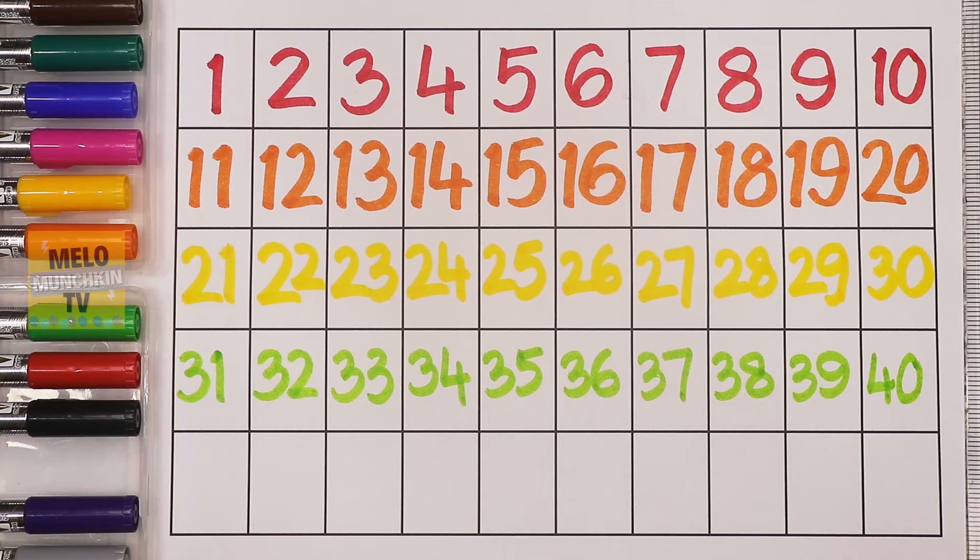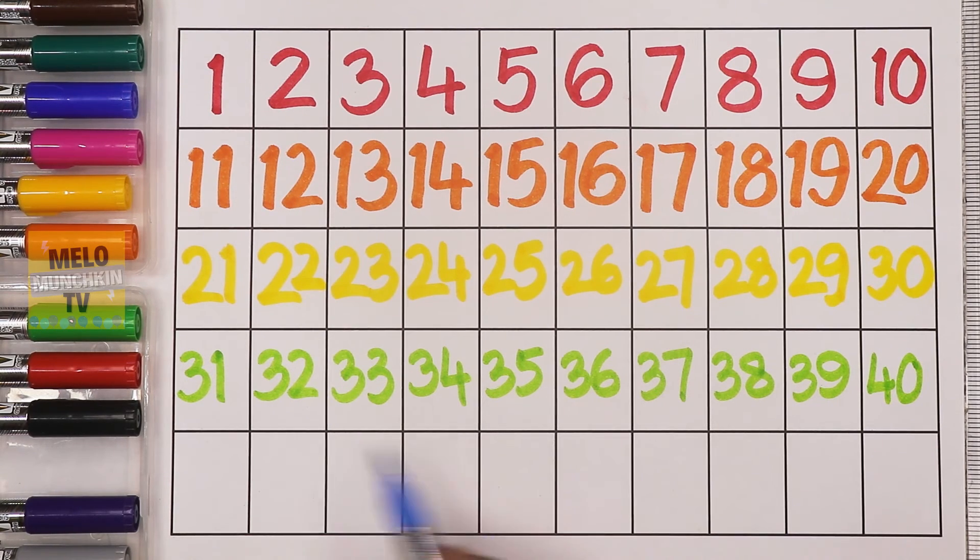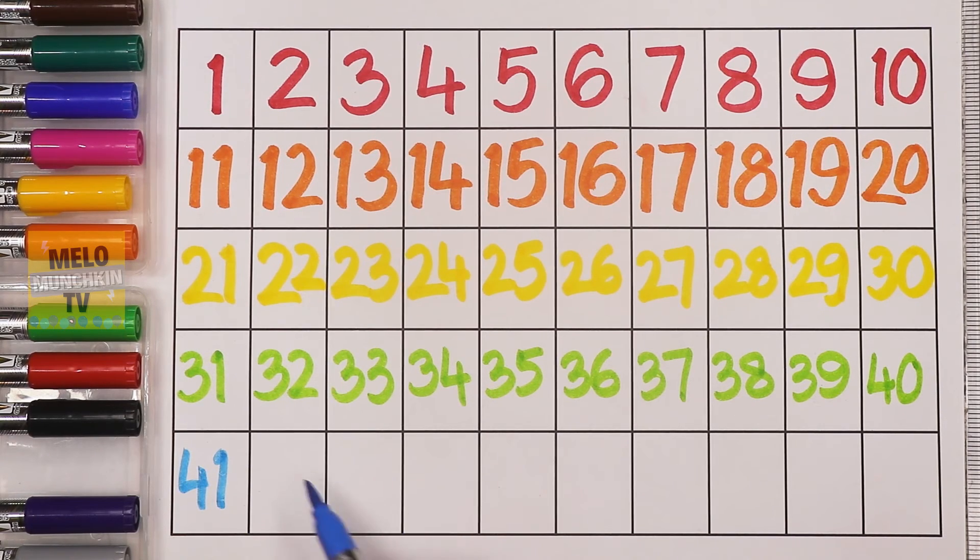And finally, I'll take blue color. So after 40: 4-1, 41; 4-2, 42; 4-3, 43; 4-4, 44; 4-5, 45.